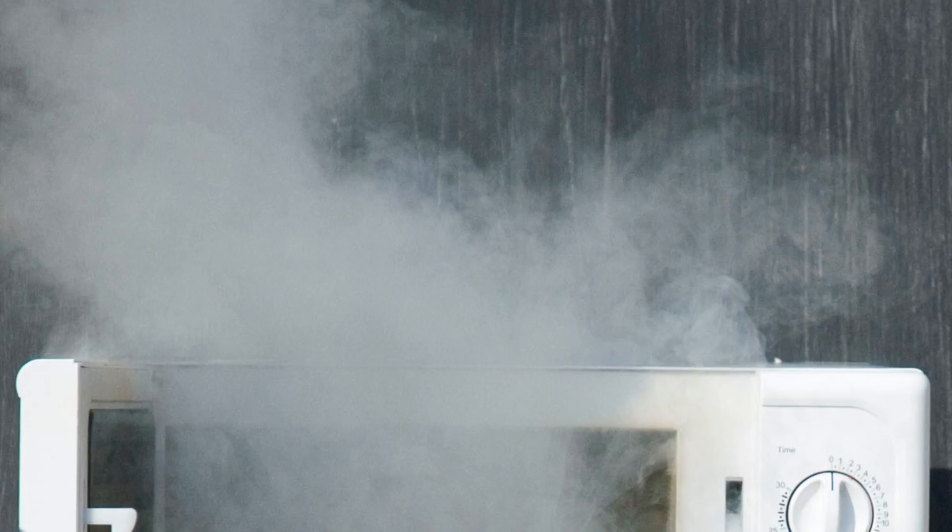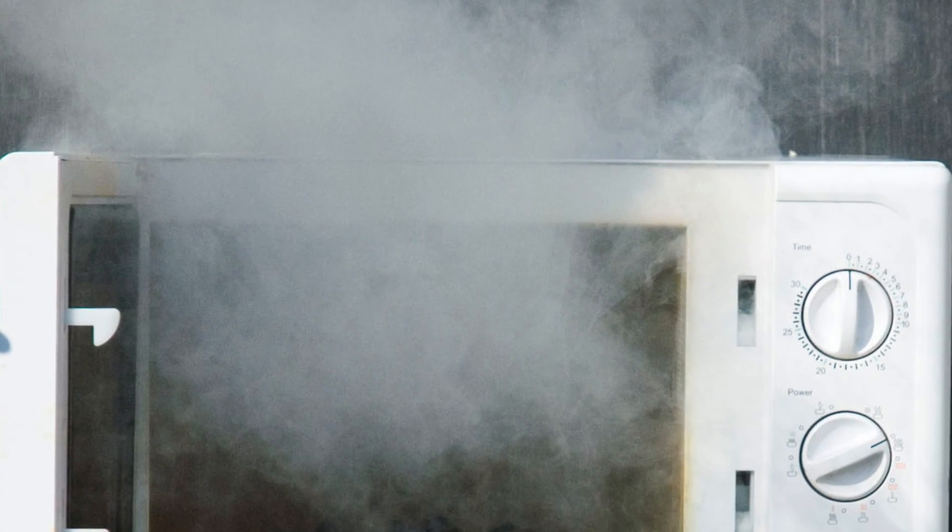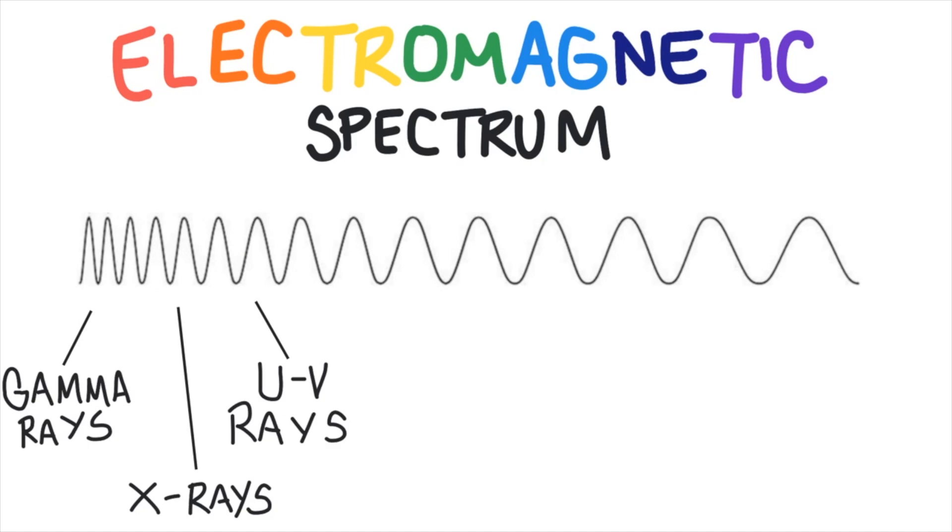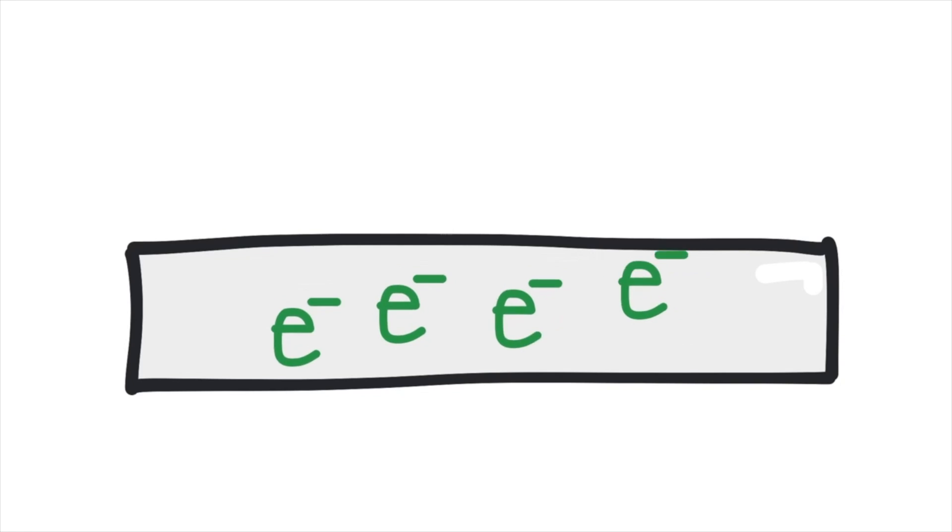You may already know that it isn't good to put metal in the microwave, and that is due to the way the microwave radiation interacts with the free electrons in the metal. Microwaves are a form of electromagnetic radiation which can cause the free electrons in metal, like aluminum, to bounce around.